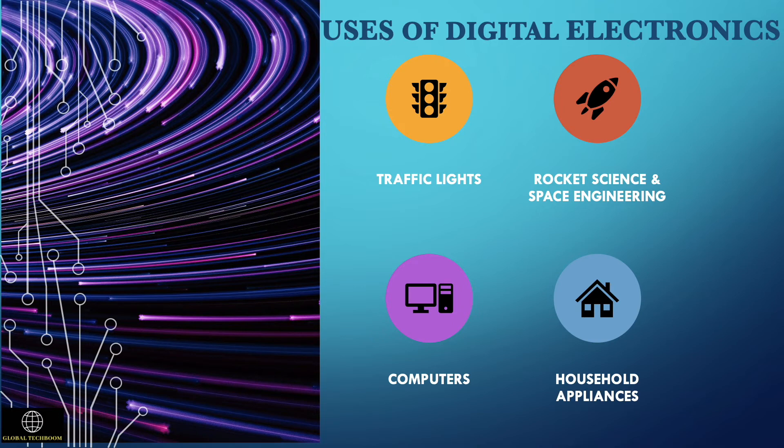Digital electronics circuits are used in common scenarios like computing, rocket science, and space engineering. Digital electronics plays a vital role in computers and cell phones. It is also used in traffic lights and in many household appliances like dishwashers and washing machines, taking advantage of digital electronics to improve functionality and speed.